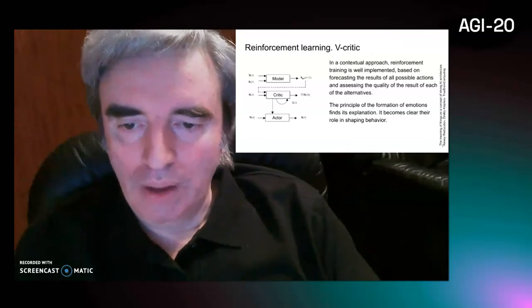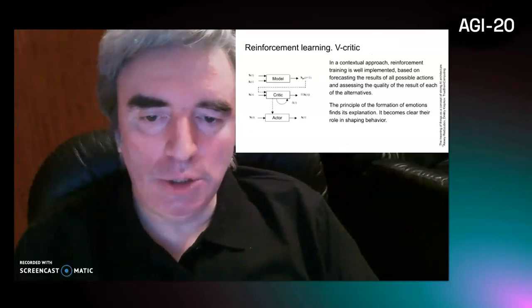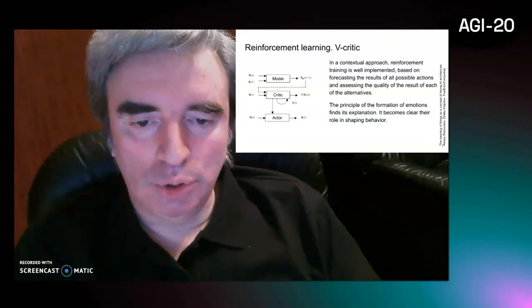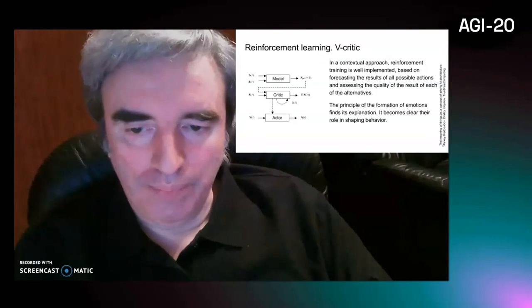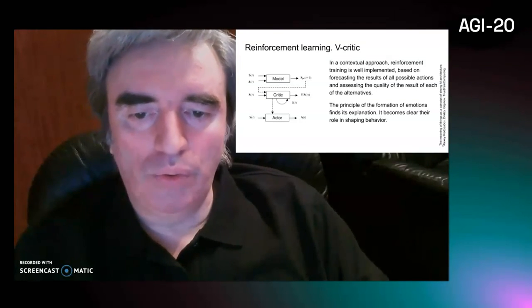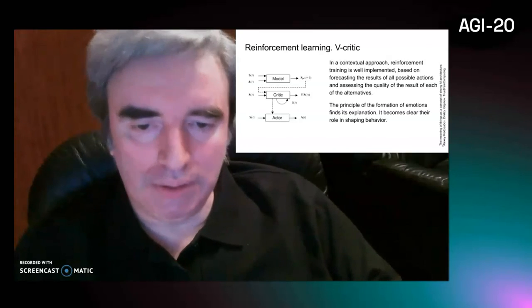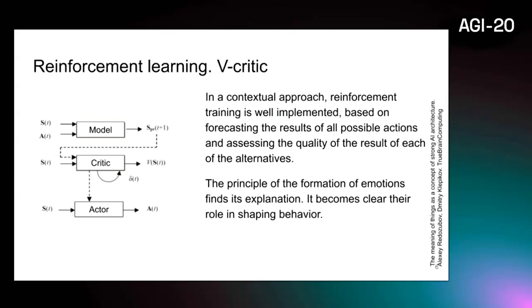The semantic approach allowed us to explain the nature of behavior and goal formation in reinforcement learning theory. There is a concept of adaptive V-critics. Classical Q-learning is based on attempting to assess the quality of the result of a particular action in a fixed situation. This leads to the same approach: to sort out everything, combining cases according to the degree of their certain visible similarity.